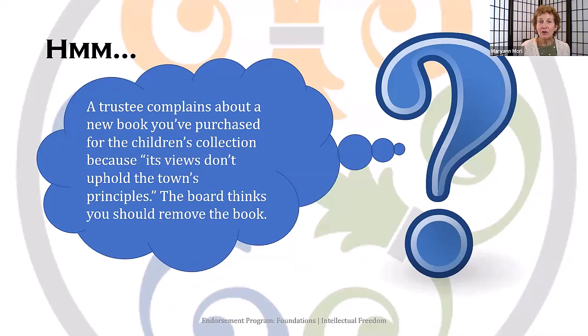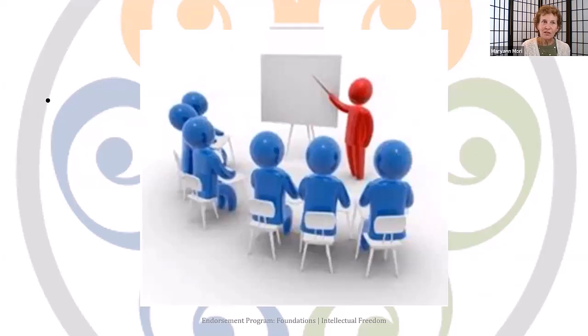Here's the third and final scenario: a trustee complains about a new book you've purchased for the children's collection because its views don't uphold the town's principles, and the board thinks you should remove the book. While this may seem unusual, it occurs more often than you might think. Since the library board oversees the library, they have a lot of power — but they may not fully understand all there is to know about public librarianship, collection development, and intellectual freedom. You have the option to stand up to the outspoken trustee, quietly take the book out of circulation to appease your board, or — the best option — take this opportunity to provide some trustee training. Assuming the book was added by following best practices of your collection development policy, you can turn an otherwise negative situation into a good learning opportunity.